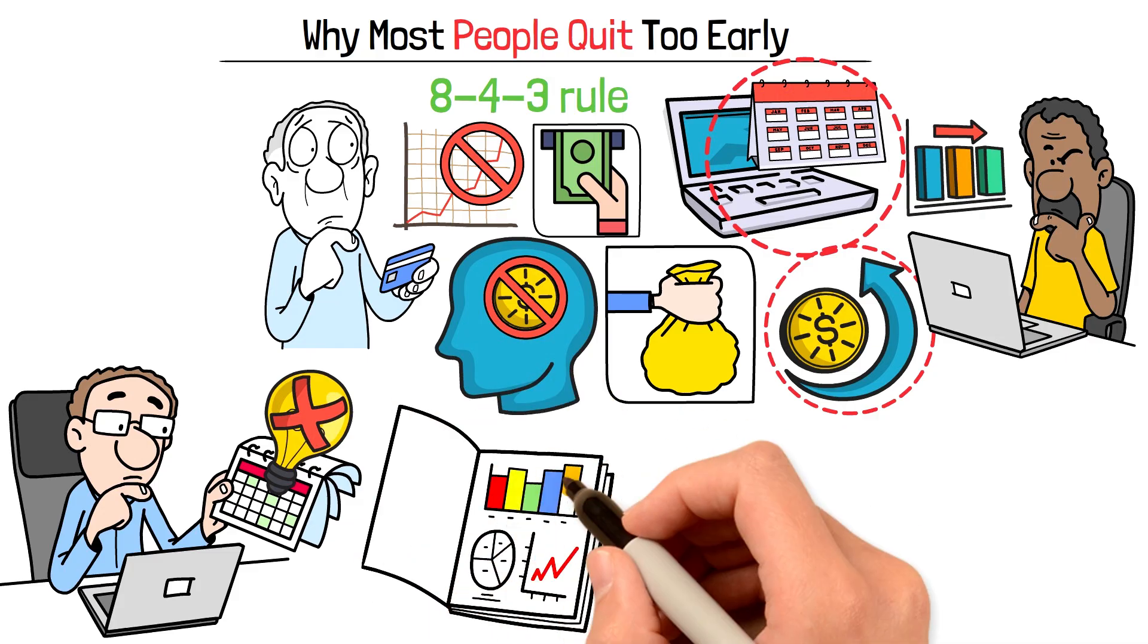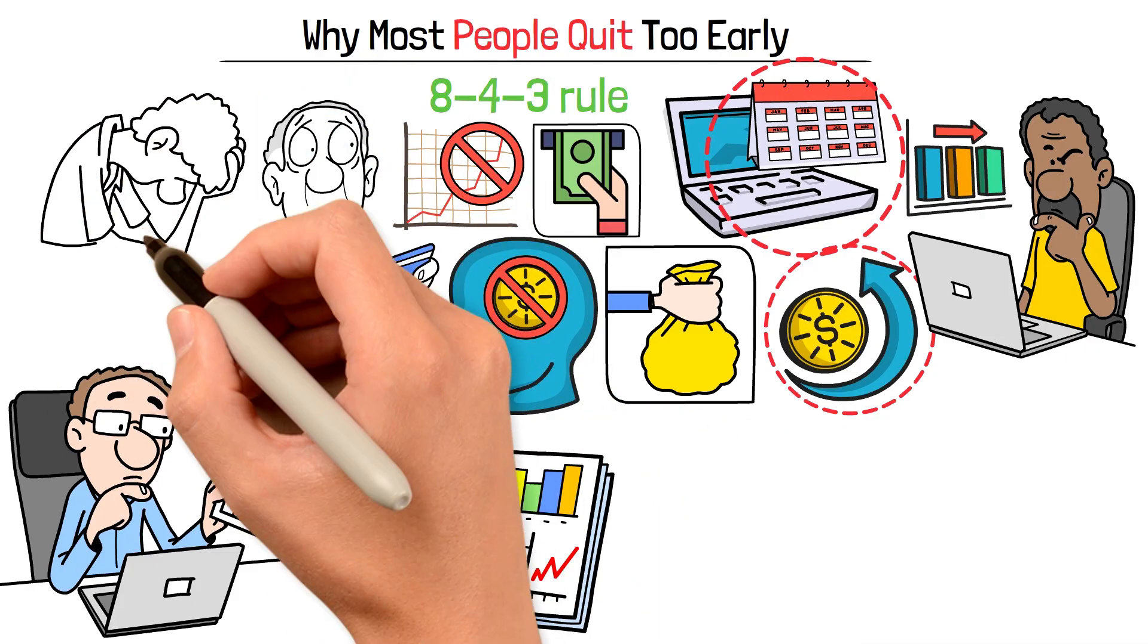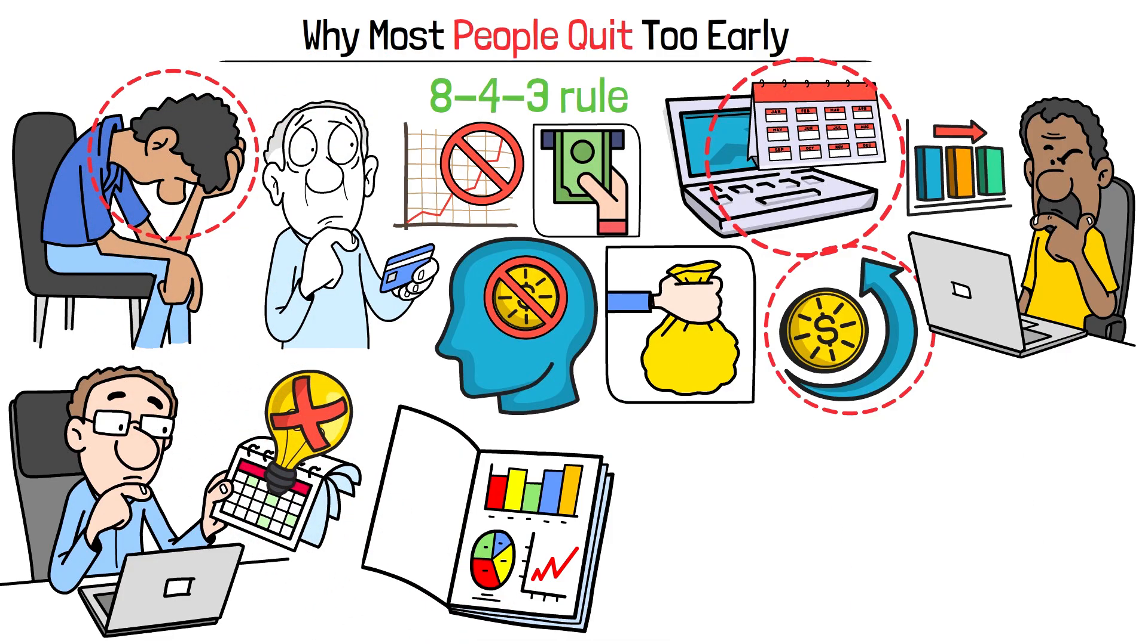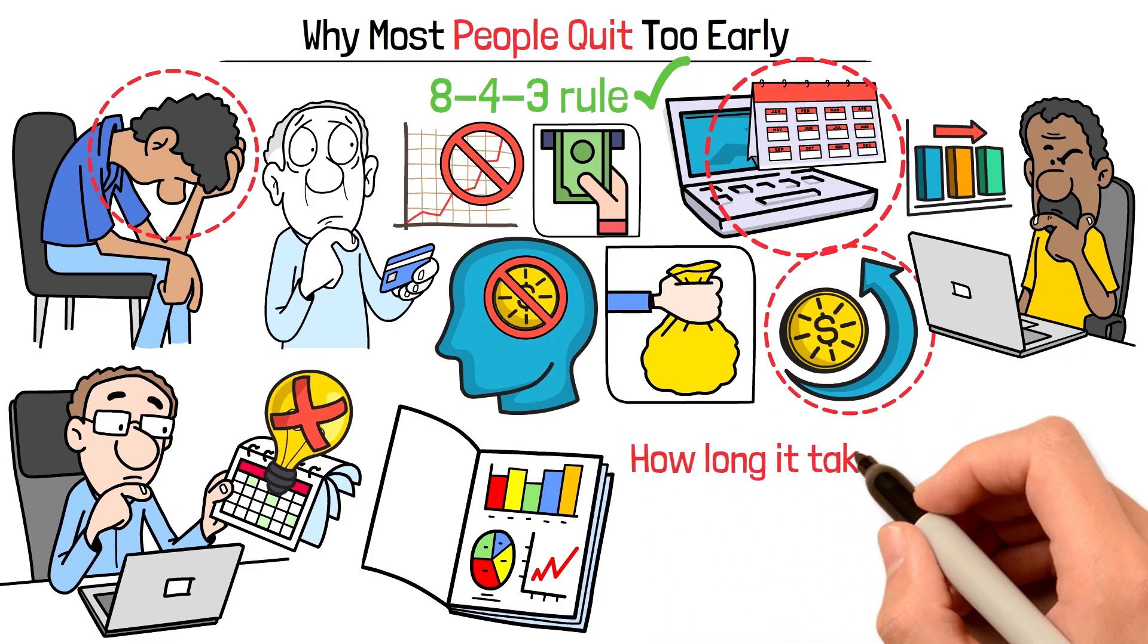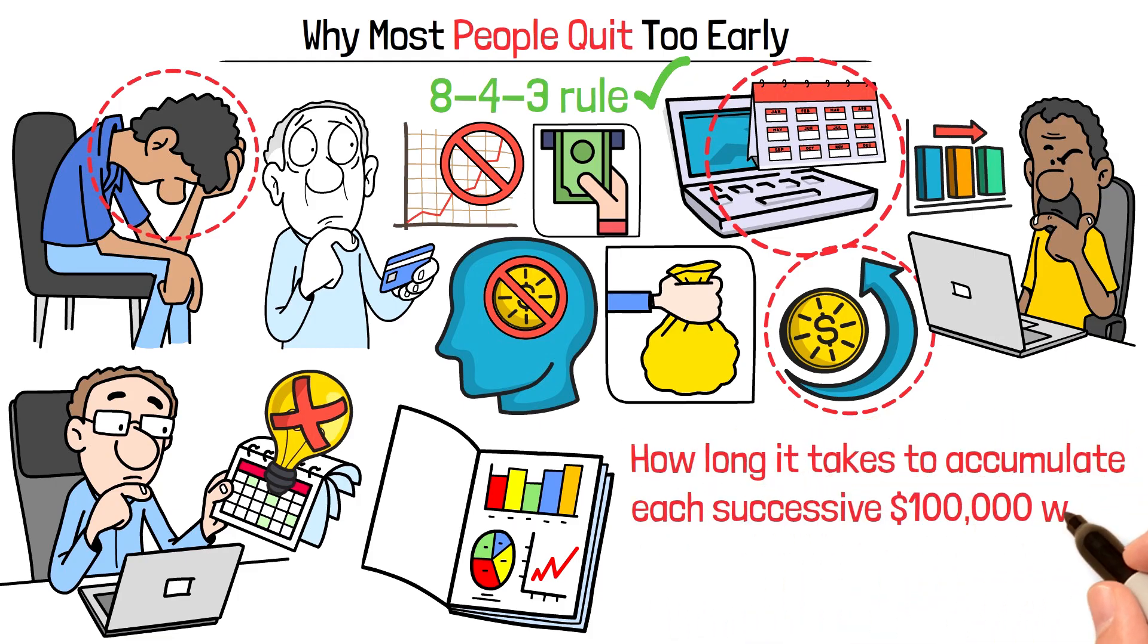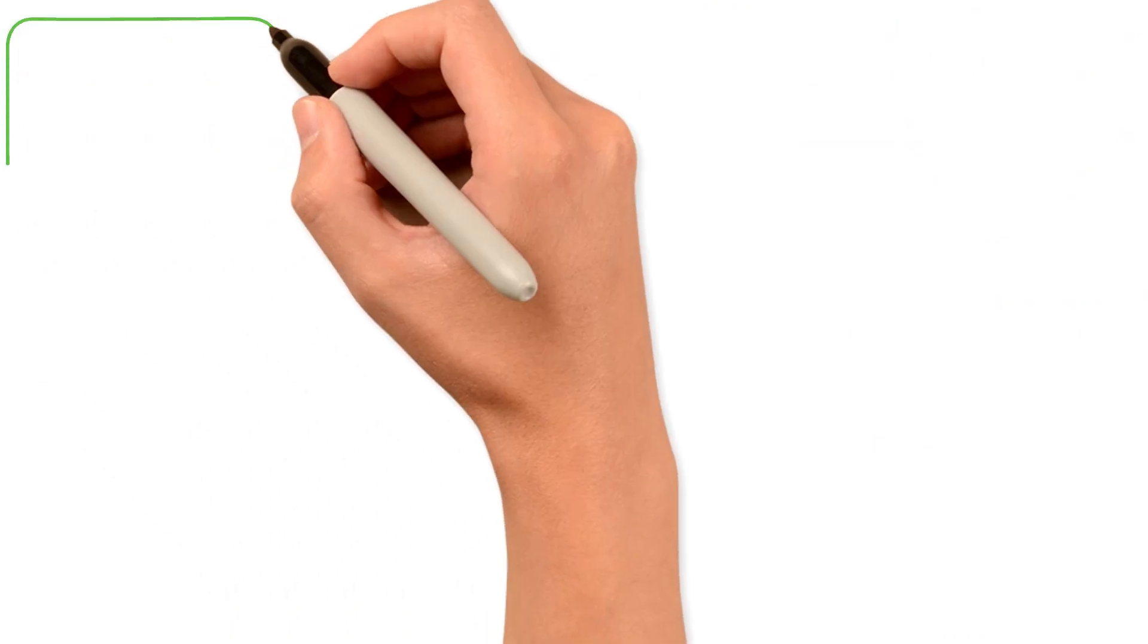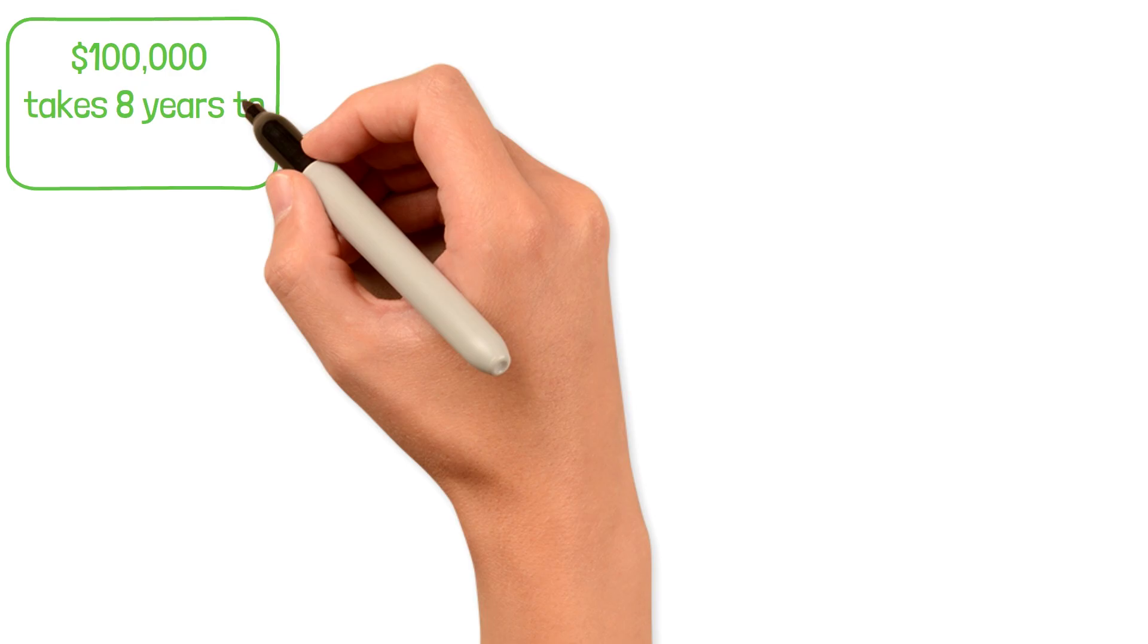This is why understanding the 8-4-3 rule is so crucial. It gives you a roadmap for what to expect, so you don't quit during the slow, early years when the real magic is being set up. The 8-4-3 rule is a simple framework that describes how long it takes to accumulate each successive $100,000 when you're investing consistently at a 10% annual return. Your first $100,000 takes approximately 8 years.